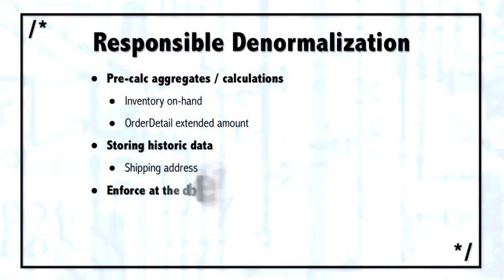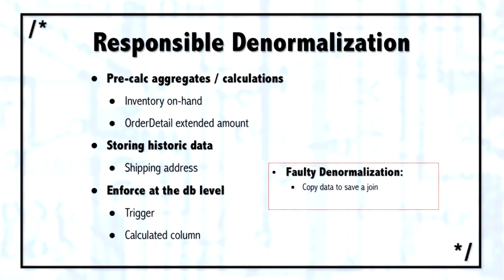So how do you enforce responsible denormalization? Well, if it's going to be responsible, it has to be at the database level. Don't depend upon the website or the middle tier or the business logic to maintain this duplicated data. So it should be enforced by a trigger, by a calculated column, by a stored procedure, something inside the database.